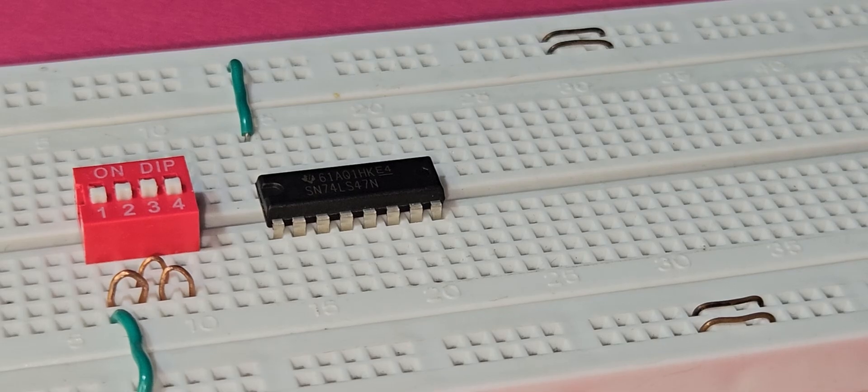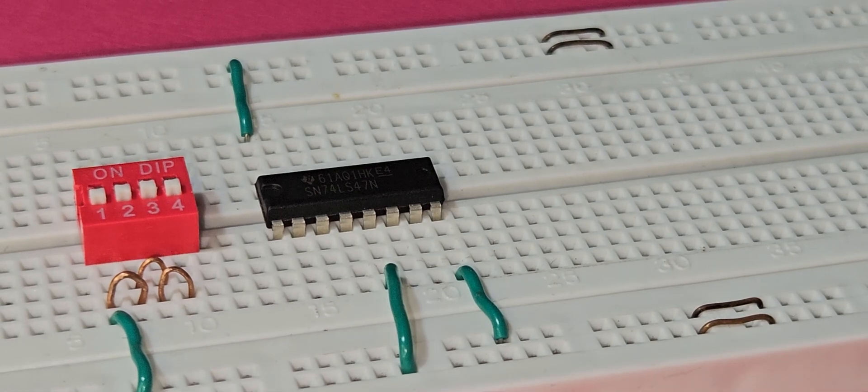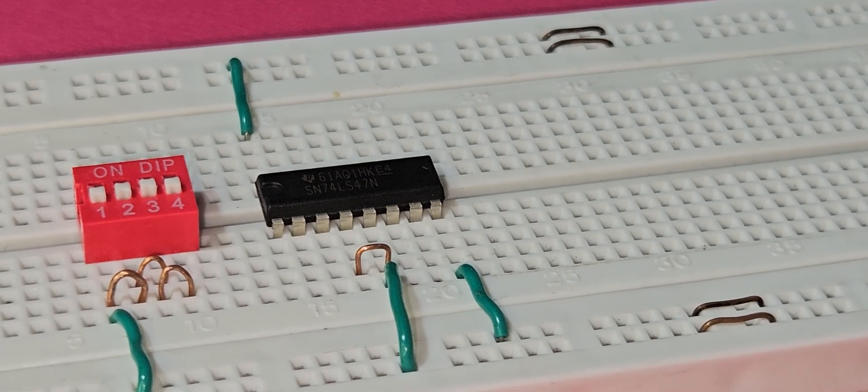This IC accepts a binary coded decimal as input and converts it into a pattern to drive a seven segment display for displaying digits 0 to 9.